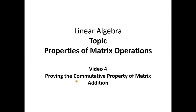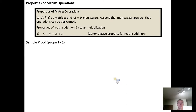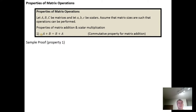In this video we're going to prove or verify the commutative property of matrix addition. Property number one, from two videos ago, indicated that matrix addition is commutative — in other words, the order of addition with matrices doesn't matter. We want to prove that A plus B is the same as B plus A.